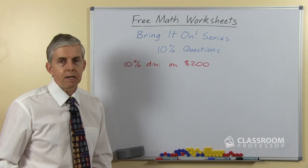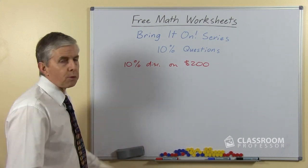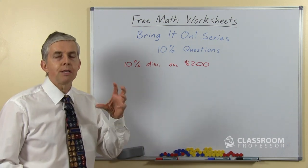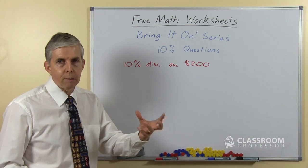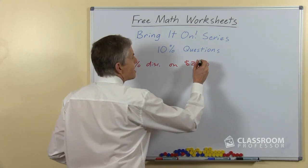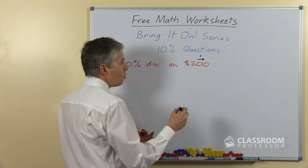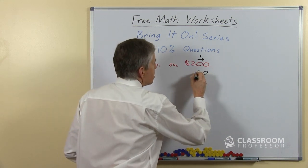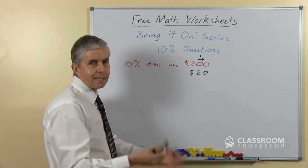This will have two steps to it, because we need to work out the 10% first and because that's the discount, that's not the part we're paying, we will subtract that. So again we can say to students well we're moving it this way, one place, so clearly that's going to be $20, let's take that away.